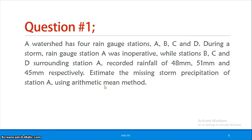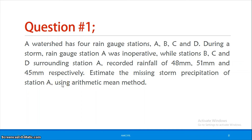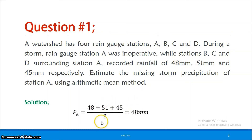Solution by arithmetic mean method: There are 4 rain gauge stations; station A is inoperative during the storm, so B, C and D are the 3 index stations recording 48 mm, 51 mm, and 45 mm respectively. Px = (48 + 51 + 45) / 3 = 48 mm. Therefore, the estimated rainfall at station A is 48 mm.